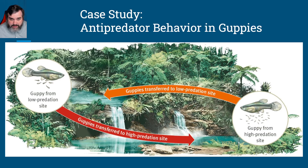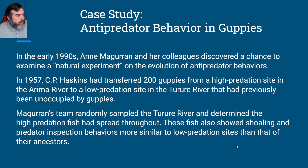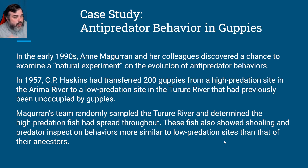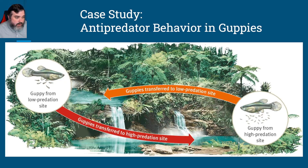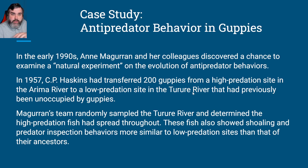There were also other experiments involving this. The question was: what if you take the guppies from the low predation site and introduce them to the high predation site, and vice versa? Does behavior continue or does it change? This was studied in the early 1990s by Ann McGuran and her colleagues. They had a natural experiment because in 1957, C.P. Haskins had transferred 200 guppies from a high predation site in the Arima River to a low predation site in the Turure River that had previously been unoccupied by guppies.